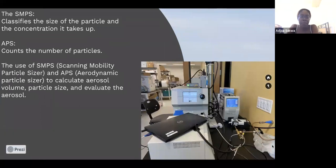After the aerosols pass through the thermodenuder, they go to these two devices. We have here on the left the SMPS and on the right the APS. The SMPS is scanning mobility particle sizer and the APS is aerodynamic particle sizer. And their job is to collect and measure the particles and take up the volume of how much space they take up.